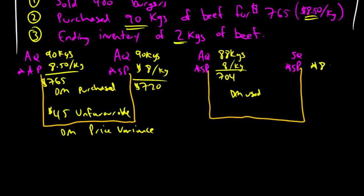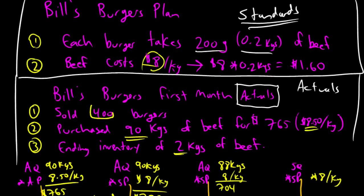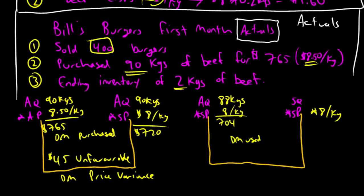Last, standard quantity times standard price. Well, the standard price remains $8. To figure out the standard quantity, we have to answer this question. Given the actual number of units produced, how much material should have been used? Given the fact that he made 400 burgers, how many kilograms of beef should he have used? So, he did actually make 400 burgers. It should take 0.2 kilograms. So, 400 times 0.2 means it should have taken 80 kilograms of beef. 80 kilograms times $8 a kilogram is $640.